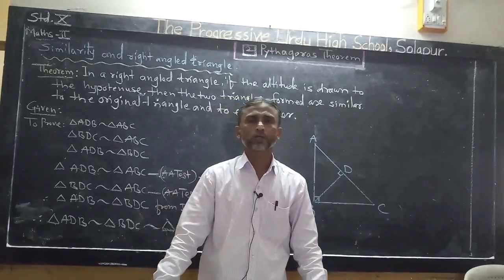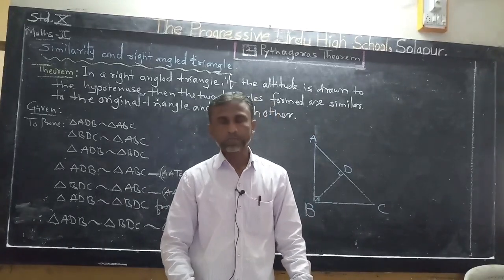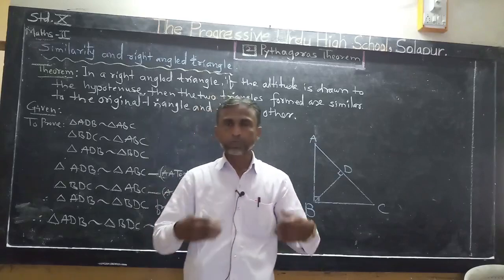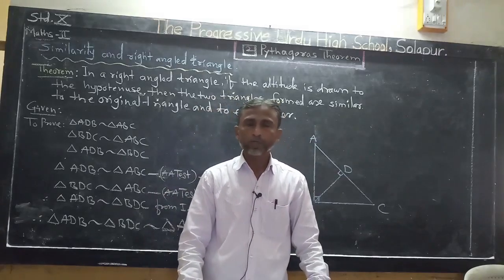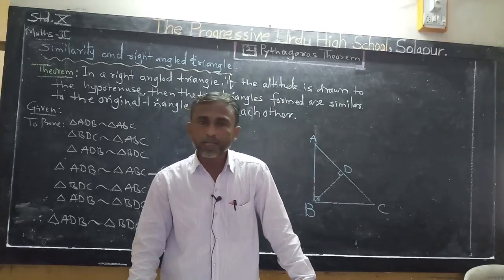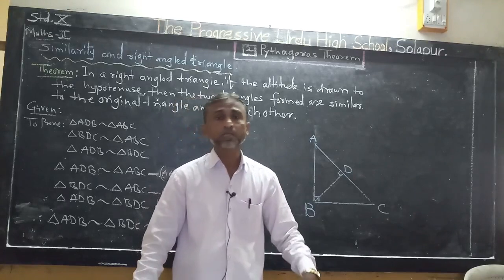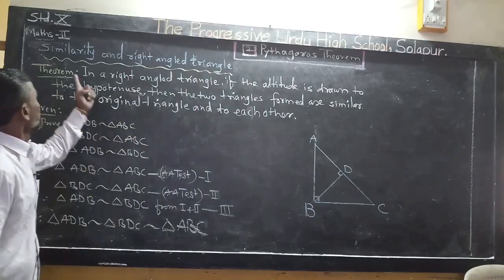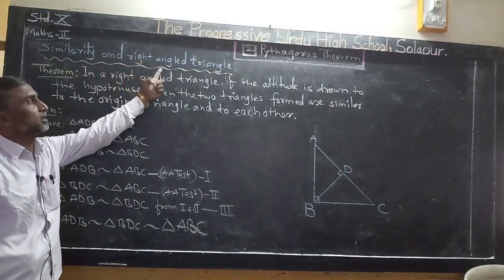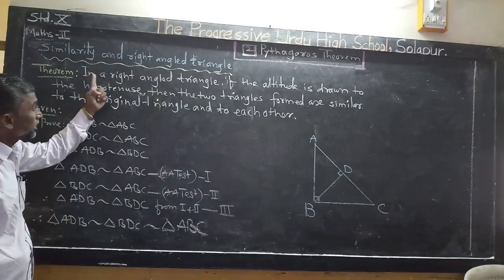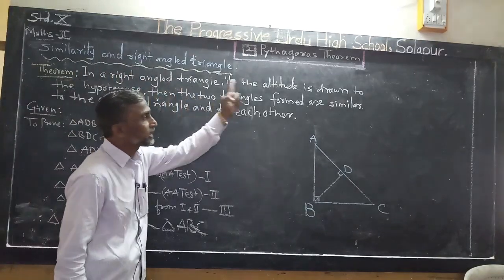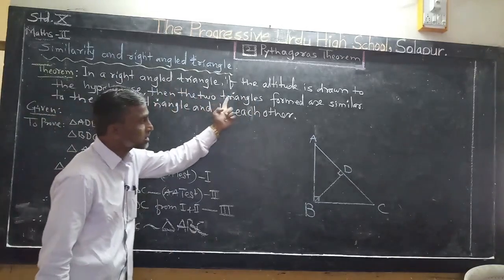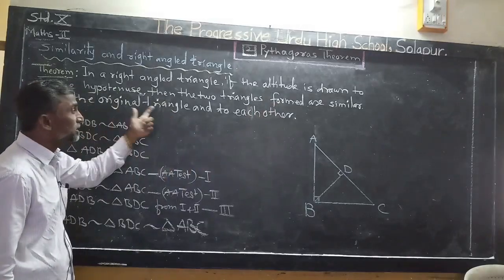Dear students, assalamu alaikum. Today I am going to start the second unit from Math second, that is Pythagoras theorem. Before discussing the Pythagoras theorem, first we should know about the similarity in right-angled triangle. The theorem states: in a right-angled triangle, if the altitude is drawn to the hypotenuse, then the two triangles formed are similar to the original triangle and to each other.